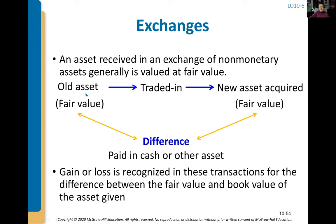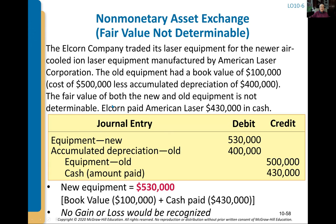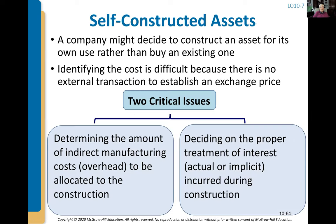We can also exchange one asset for another — potentially old asset plus cash for a new asset. We calculate the fair value of both the new and old assets and determine whether there's a gain or loss. In this example, we paid $430,000 cash plus gave up equipment with a net book value of $100,000 (cost $500,000 minus $400,000 accumulated depreciation) and received a $530,000 asset. We take the old asset off the books and record the new one.